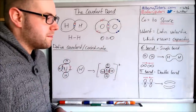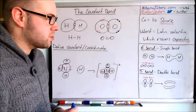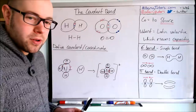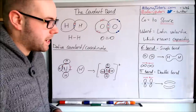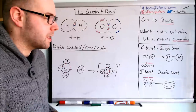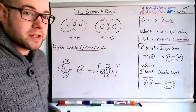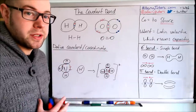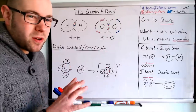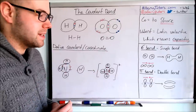Sigma bonds are actually reasonably strong bonds. The other type of bond is a pi bond. A pi bond is also described as a double bond, but that's not quite strictly true, as I'll show you in a moment.